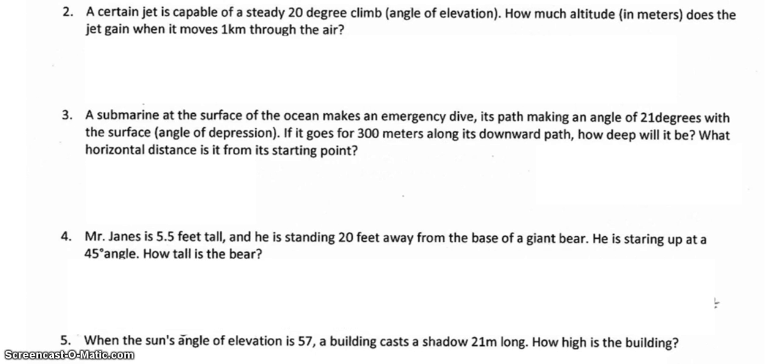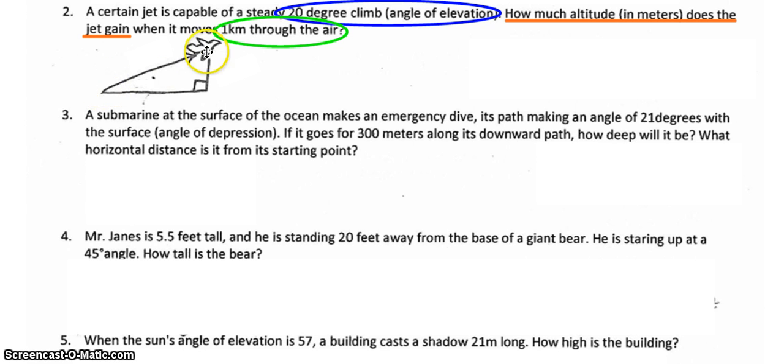First let's look at number two. Number two, a certain jet is capable of a steady 20 degree climb angle of elevation. How much altitude in meters does the jet gain when it moves one kilometer through the air? I'll start by circling my important information such as the 20 degree climb and the one kilometer through the air and underline the question which is all about how much altitude does that jet gain. Next I'll draw myself a diagram of this jet moving through the air. So here I have my jet kind of climbing on this diagonal up through the air.